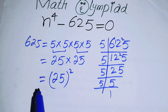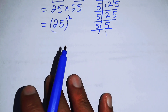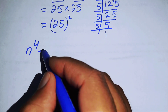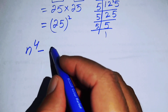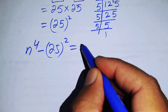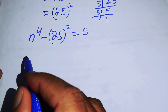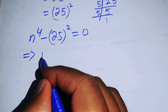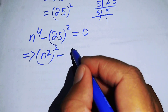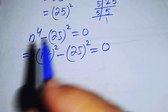So we can write 625 as 25 whole squared. Replacing this in the equation, it becomes n to the power of 4 minus 25 whole squared equals 0. We can also write n to the power of 4 as n squared, whole squared, so the equation becomes n squared whole squared minus 25 whole squared equals 0.